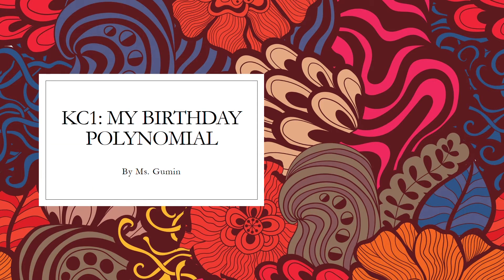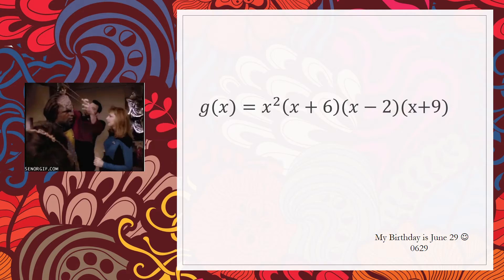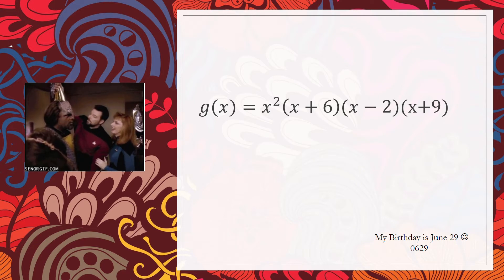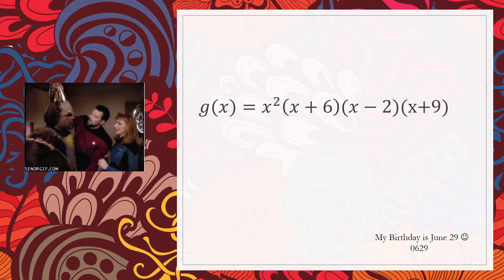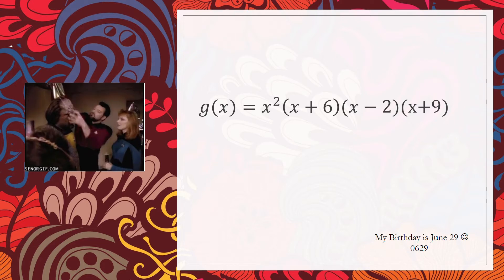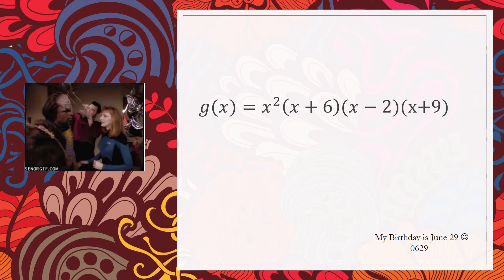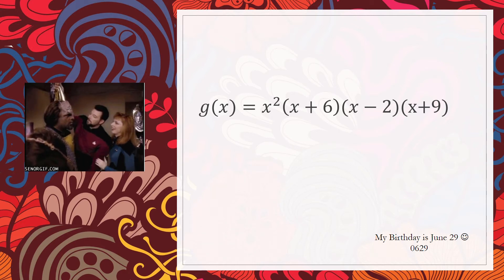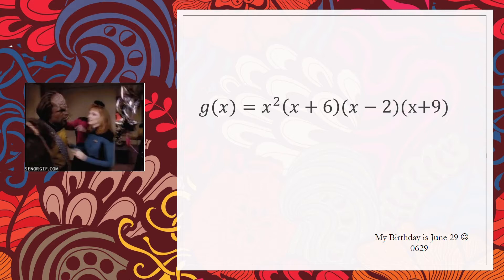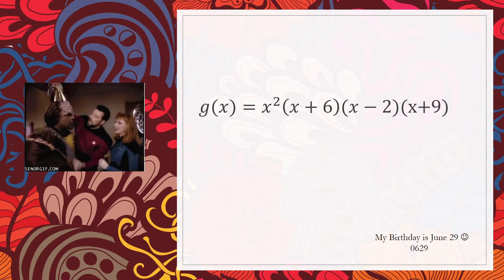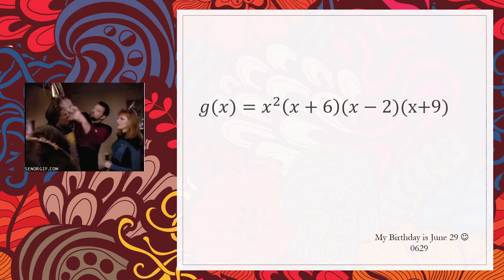Hello everyone, here is my birthday polynomial example, in case you wanted to hear the instructions again or find it easier than reading the paper. My birthday is June 29th — that's 0629 — so I have an x squared term. The x doesn't have a number with it because I have a zero; whenever you have a zero, you just have a regular x. I started with a power of 3 but didn't like how it looked in Desmos, so I went with 2.